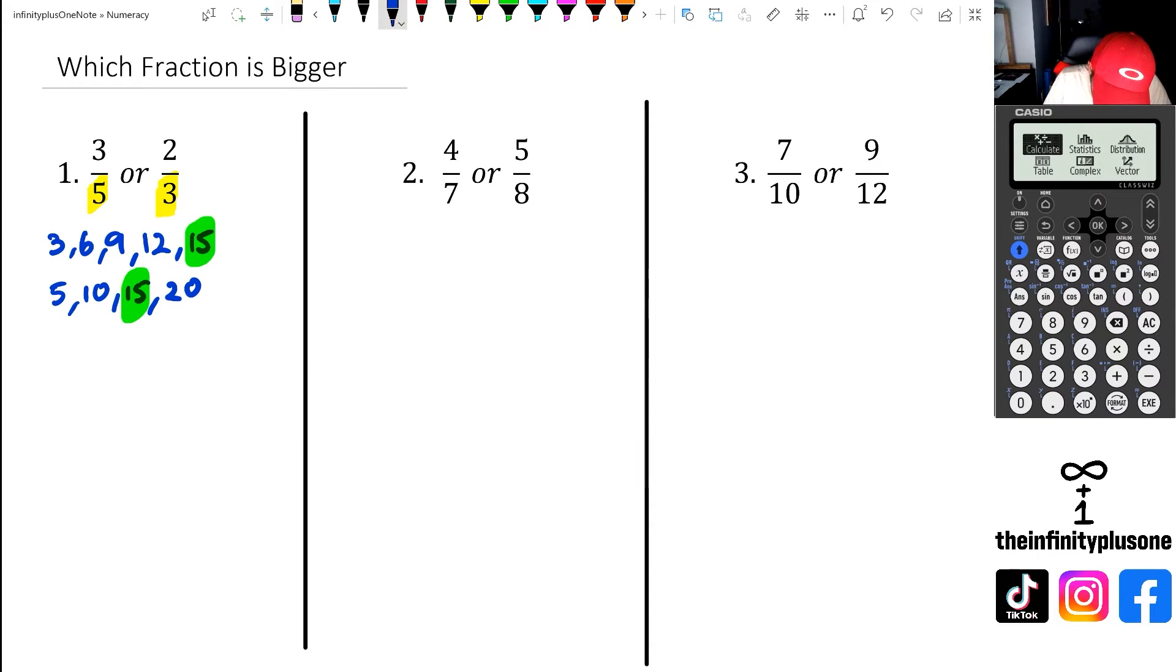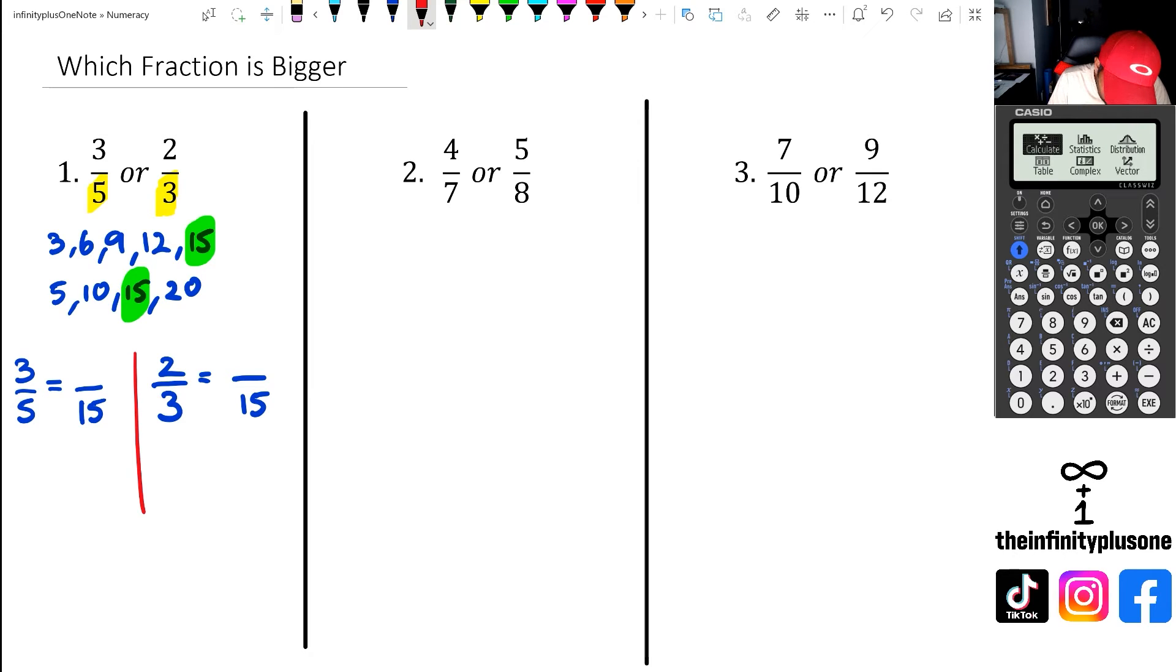So what I need to do is convert three-fifths with a denominator of fifteen. And what I'm also going to do is convert two-thirds with fifteen as the denominator. And what you'll notice is that to get from five to fifteen, I'm actually multiplying by three.